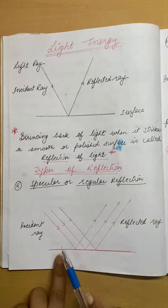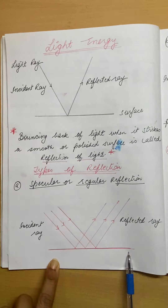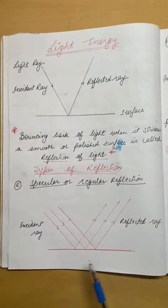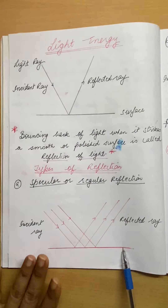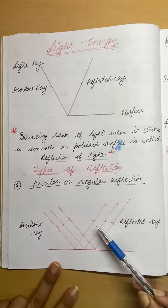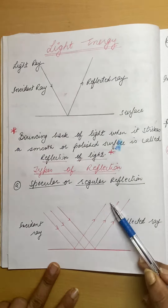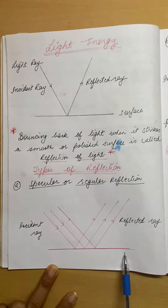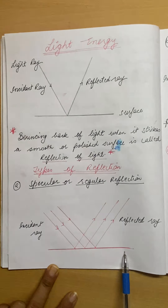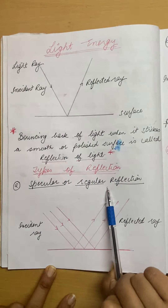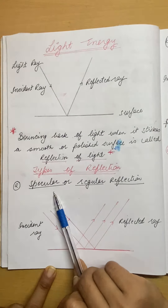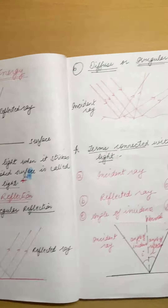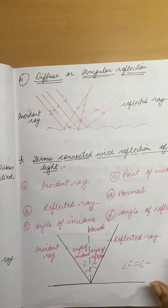Suppose here we have a smooth mirror-like or polished surface. The reflected rays are parallel to each other. So reflection that takes place on a smooth surface is called regular reflection or specular reflection.